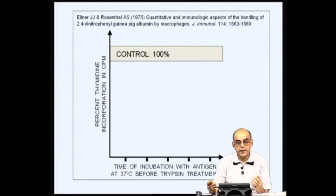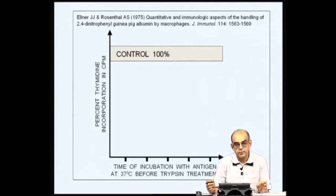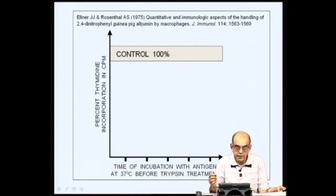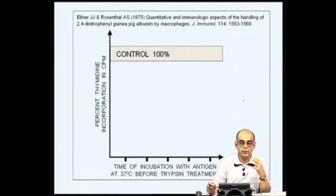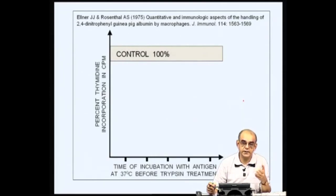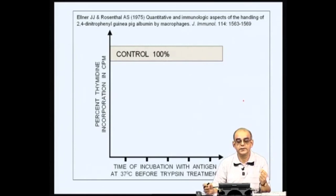They took cells from a guinea pig immunized with PPD, then isolated various populations by taking peritoneal exudate cells (PEC) from the peritoneal cavity. These peritoneal exudate cells were their source of T lymphocytes, and they also had macrophages in that preparation, which served as antigen presenting cells — although at that time there was no knowledge about the function of the antigen presenting cell or macrophage.